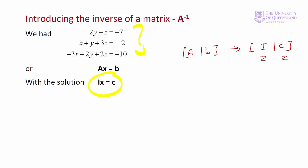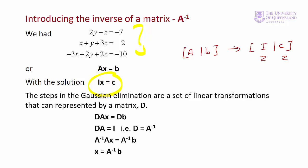How did we get the identity matrix on the left-hand side? The elementary row operations we performed to get the solution can be represented by a matrix D. If we pre-multiply AX by D, then D times A gives the identity matrix, and D times B gives the solution C.